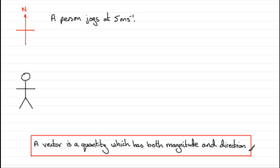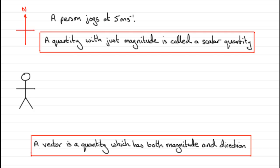But if we just refer to the speed alone, 5 meters per second, where this jogger could jog in any direction, then we have what is called a scalar quantity, which is a quantity that is just concerned with magnitude.